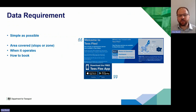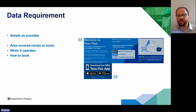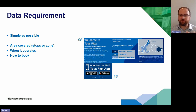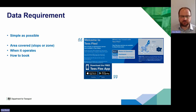We've ended up with a very simple set of required data, because there are so many variations and many of these organisations — particularly community transport and demand-responsive operators — aren't necessarily the most tech-savvy and don't have a lot of resources. So we've distilled it down to the minimum we need: where does the service cover (stops or zones), when does it operate (e.g. Monday to Friday, 7am–7pm or split hours), and how do you book it — app, telephone, or web?